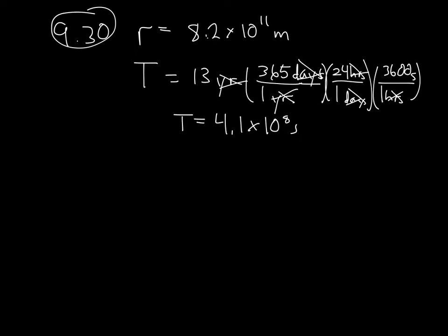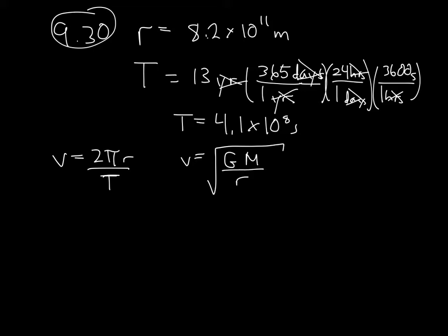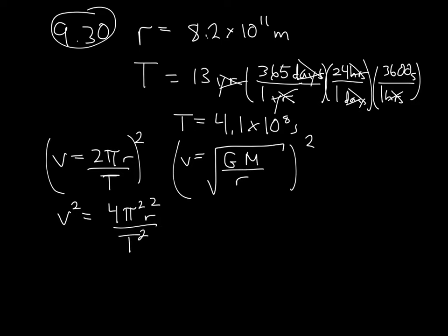We're asked to find the mass of the star 55 Cancri and compare it to the mass of the sun. I know that the velocity of an orbit equals 2 pi r over T, and also that V equals the square root of G times the mass of whatever you're orbiting divided by the radius. Squaring both: V squared equals 4 pi squared r squared over T squared, and V squared equals G times M over r.